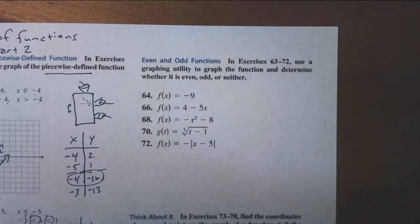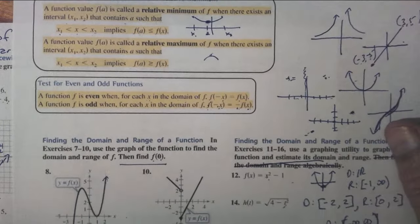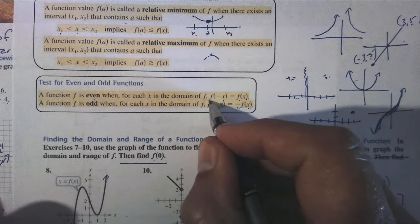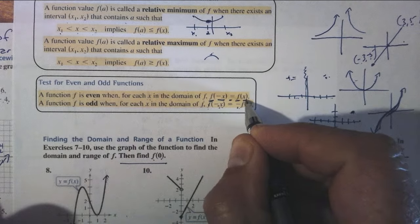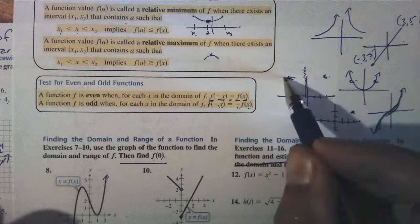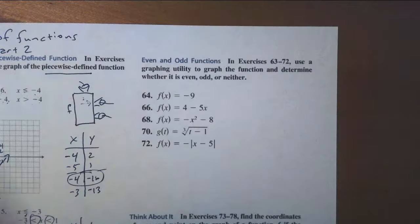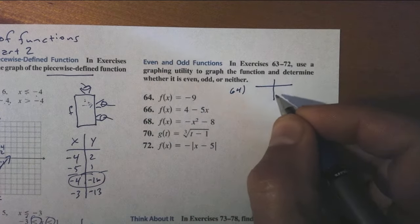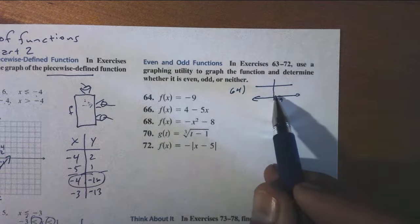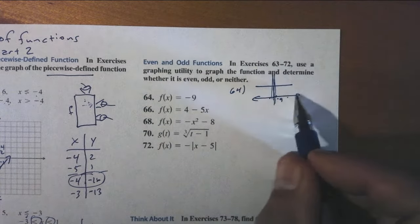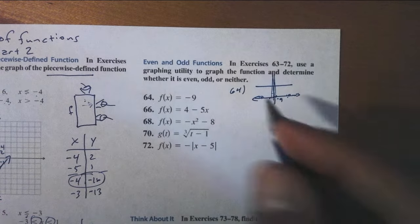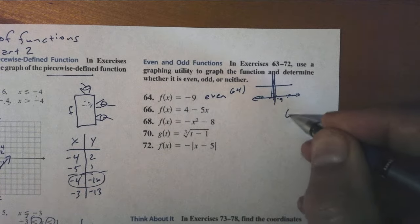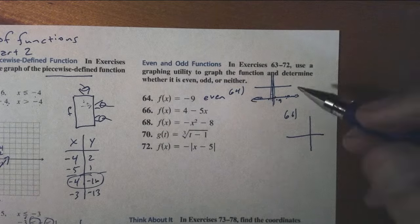Let's review even and odd functions. A function is even if for each value in the domain, the height to the left is the same as the height to the right — it reflects over the y-axis. For problem 64, f(x) equals negative 9. The height is negative 9 everywhere. The height to the left is the same as the height to the right, therefore this graph is even.